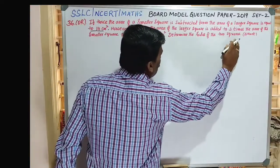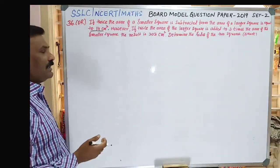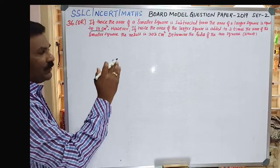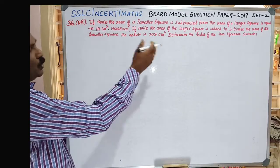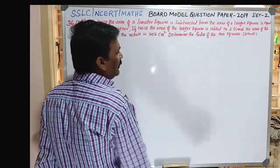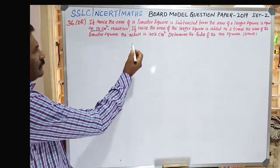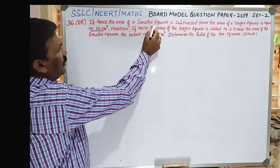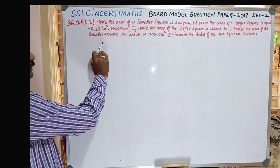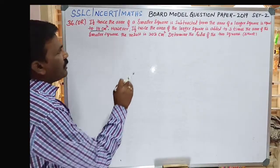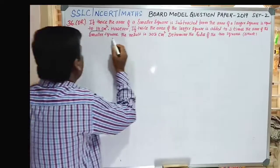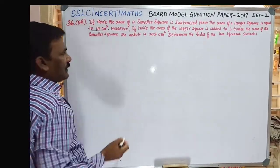We need to determine the sides of the two squares. So we have two equations: the first is from the subtraction condition giving 14 cm², and the second is from the addition condition giving 203 cm².